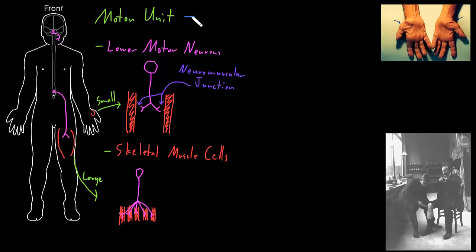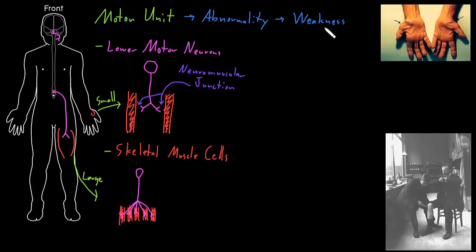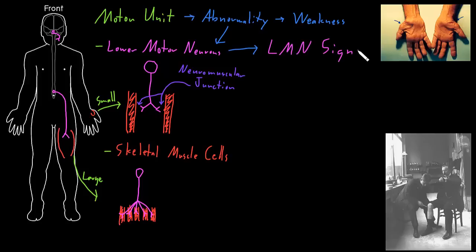A number of things can happen with any kind of abnormality of the motor unit. One abnormality we could see is weakness or loss of strength of contraction of skeletal muscle. Problems of other parts of the nervous system can also cause weakness, and we'll get into some of that in later videos. Abnormalities of the lower motor neurons specifically, in addition to potentially causing weakness, can cause several other changes called the lower motor neuron signs.